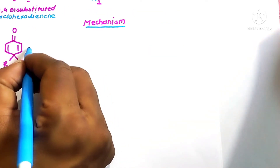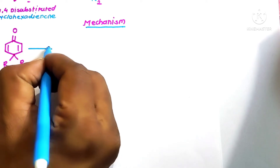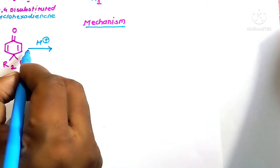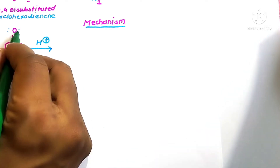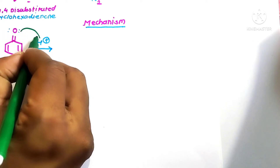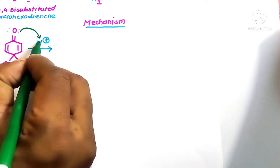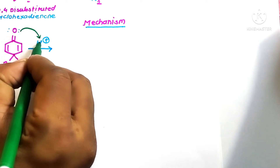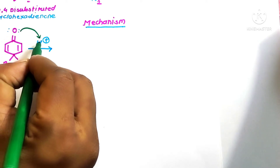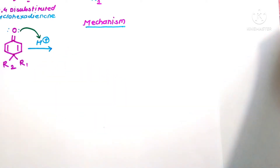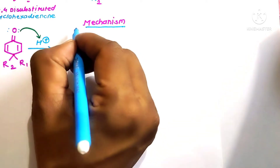Starting with the substrate molecule reacted in the presence of acid catalyst, the oxygen's non-bonded lone pair of electrons donates toward the electron-deficient H⁺ ions, forming a new bond between the electron-rich oxygen and the electron-deficient H⁺ ion.